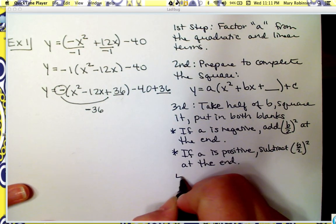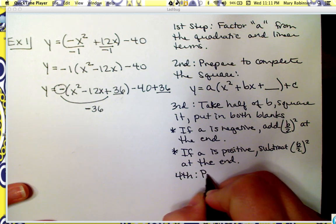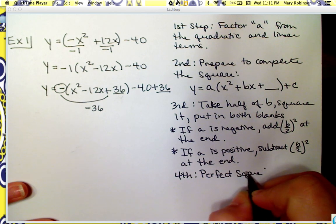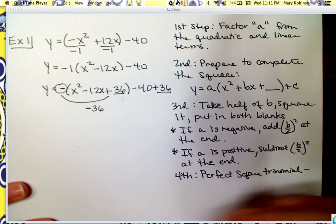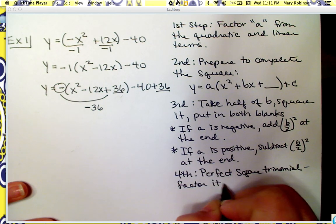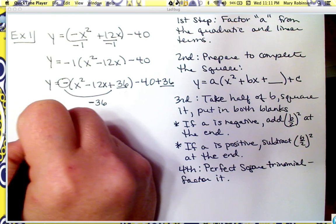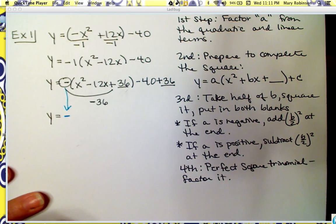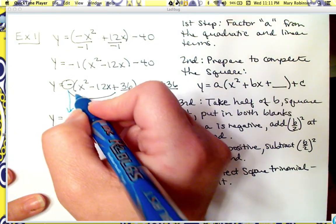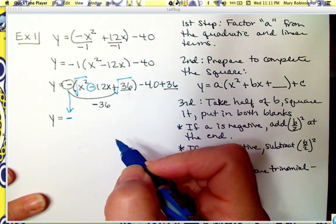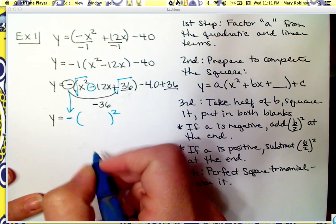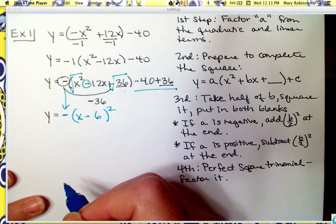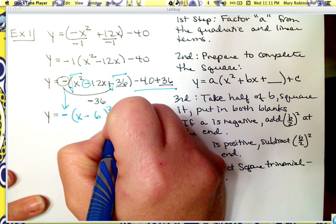At this point we want to factor the perfect square trinomial we created. We want to go ahead and bring down whatever we have. We've got the negative out front that we have to keep. Then we factor: take the square root, keep the sign, take the square root again, and write the quantity squared. So we get x minus 6, quantity squared. Then we simplify: negative 40 plus 36 gives us negative 4.